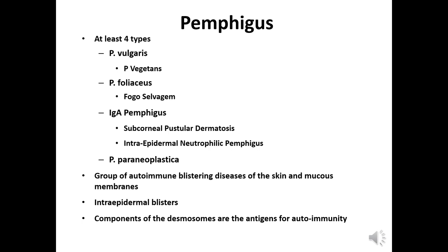Within the group of pemphigus, we have at least four types: pemphigus vulgaris, pemphigus foliaceus, IgA pemphigus, and paraneoplastic pemphigus. These are a group of autoimmune blistering diseases that affect both the skin and mucous membranes. The targeted components are parts of the desmosome, which are antigens that initiate an autoantibody reaction.